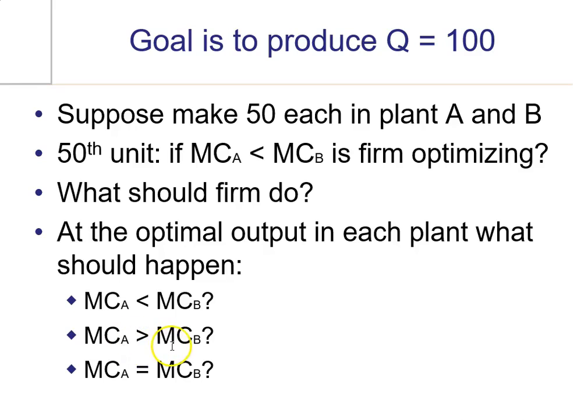So a company is not optimizing in either of these two scenarios. If the marginal cost is lower in one plant, produce in the lower marginal cost plant.